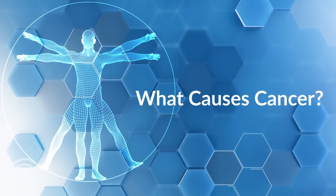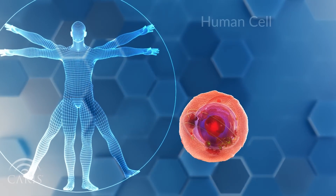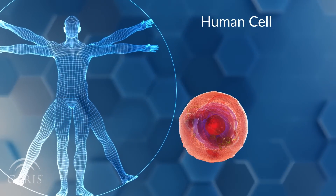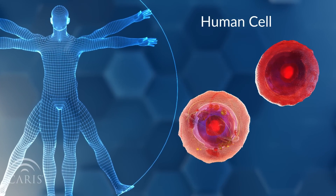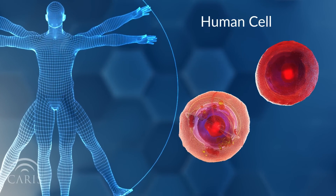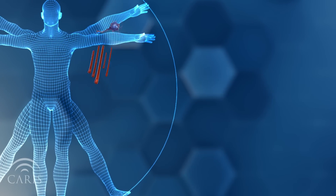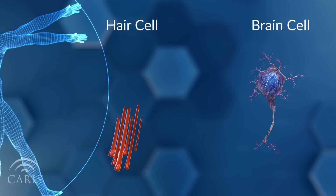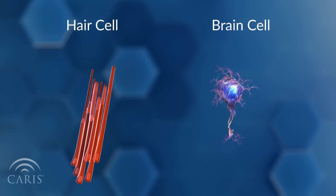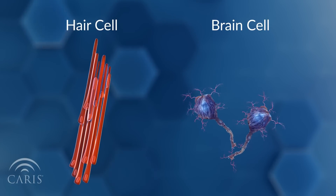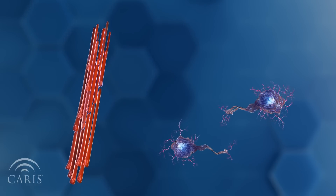What causes cancer? Every cell in your body is designed to make a copy of itself at varying rates based on the cell's designated function. For example, hair cells replicate very quickly, where brain cells replicate at a slower rate.